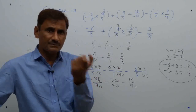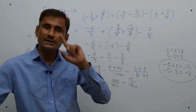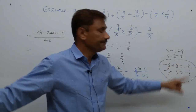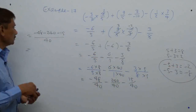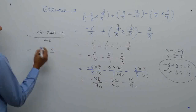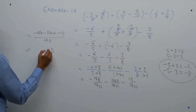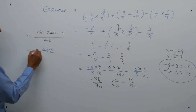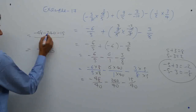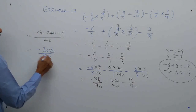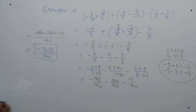To recap the rule: whenever all signs are equal, add the numbers and keep that sign. Whenever signs are opposite (different), subtract and apply the sign of the bigger number. Here all terms are negative, so we add: 48 + 240 + 15 = 303. The final answer is −303/40. Cancellation is not possible, so this is the simplified form.